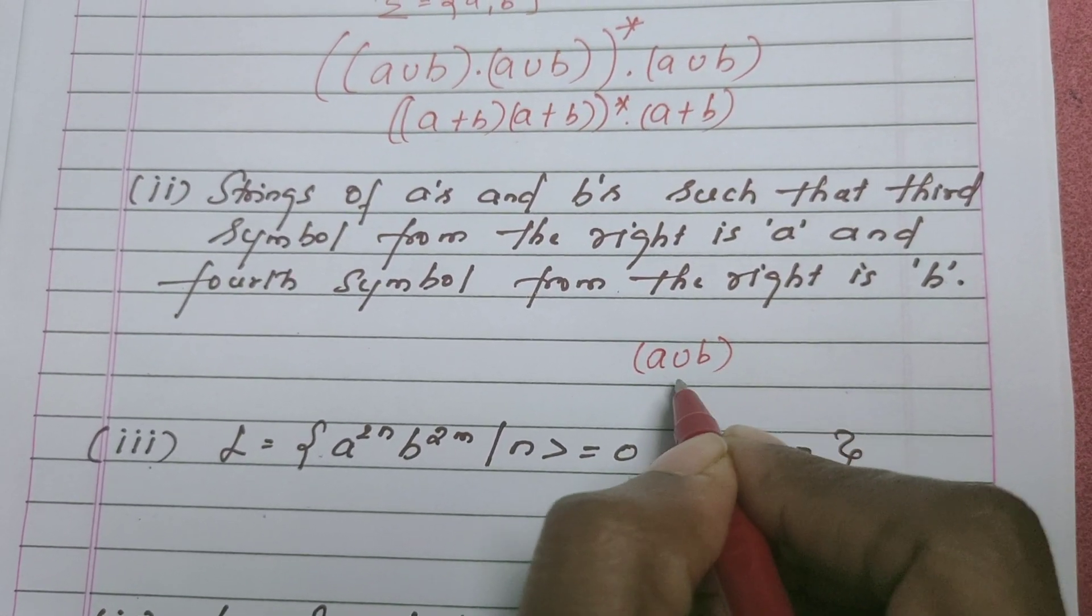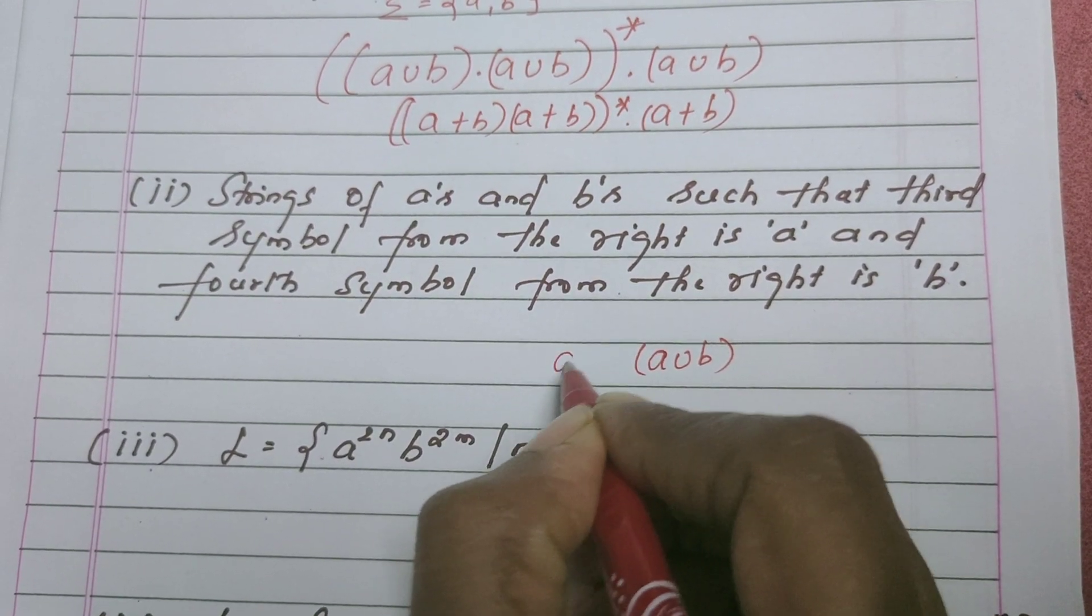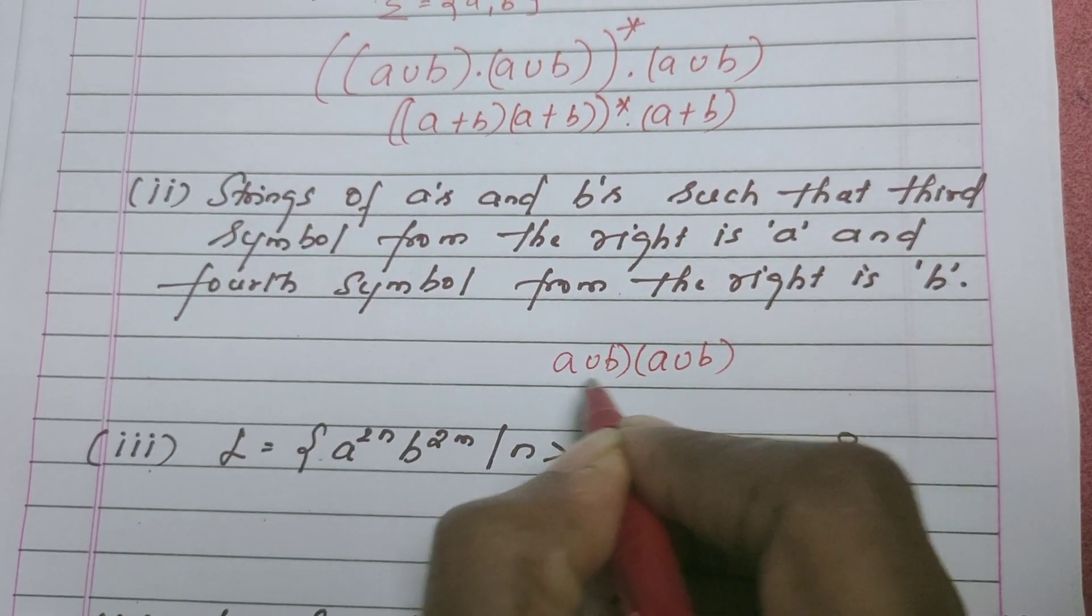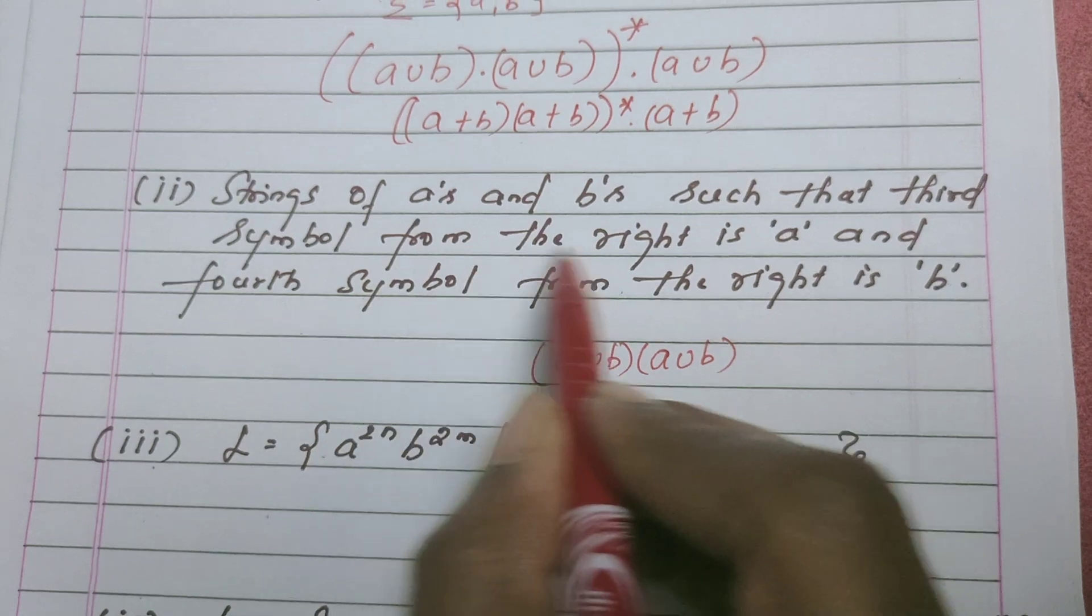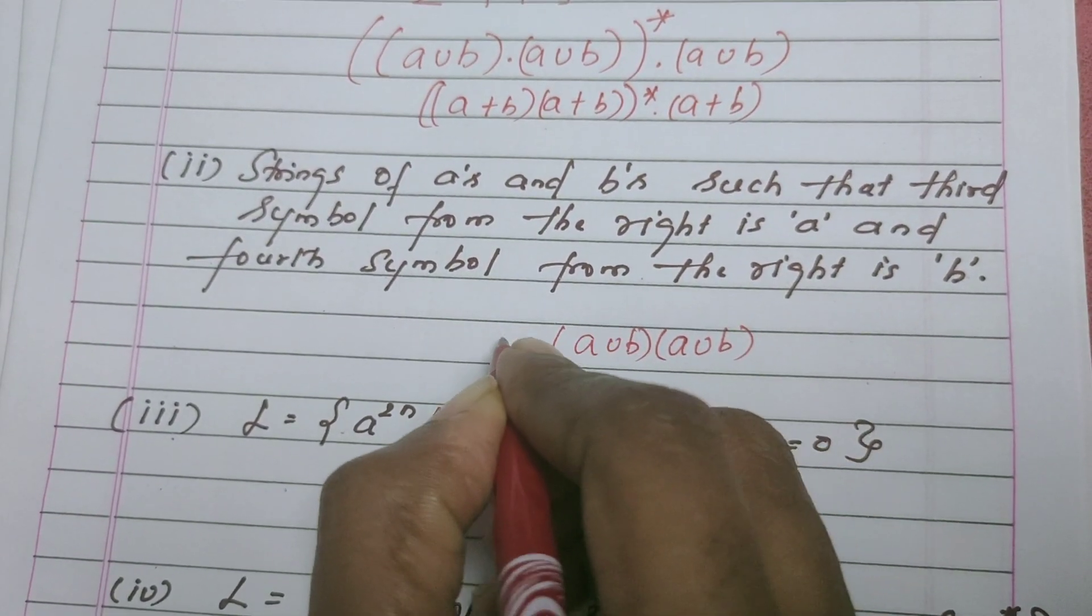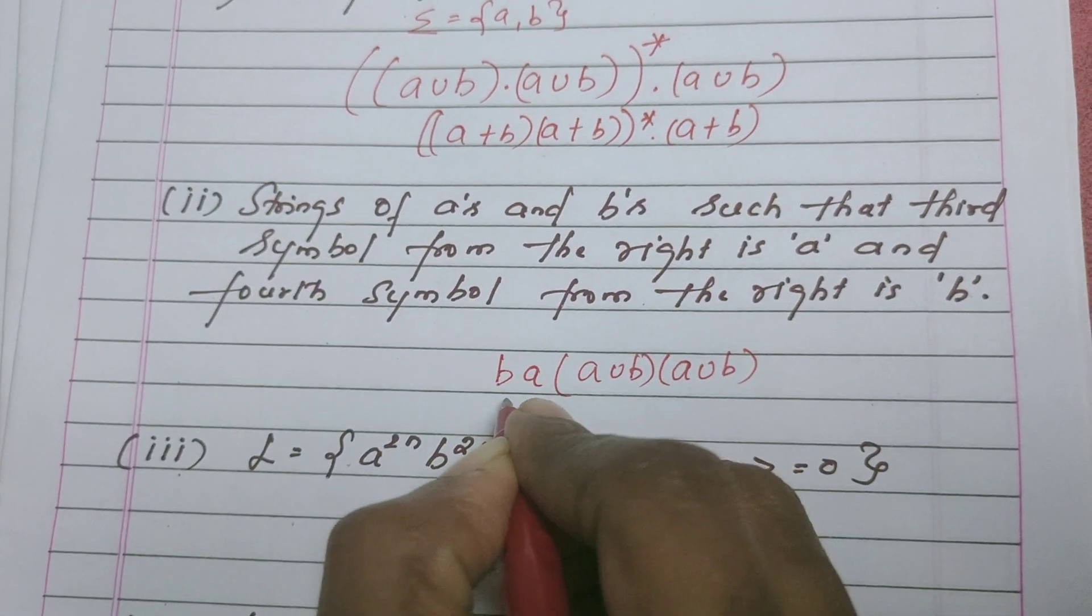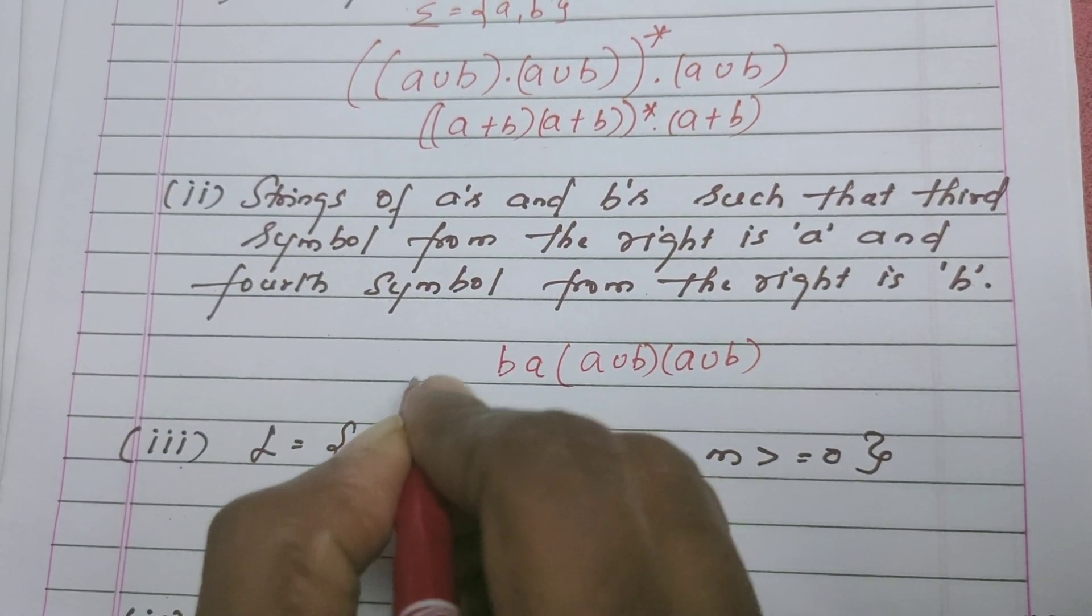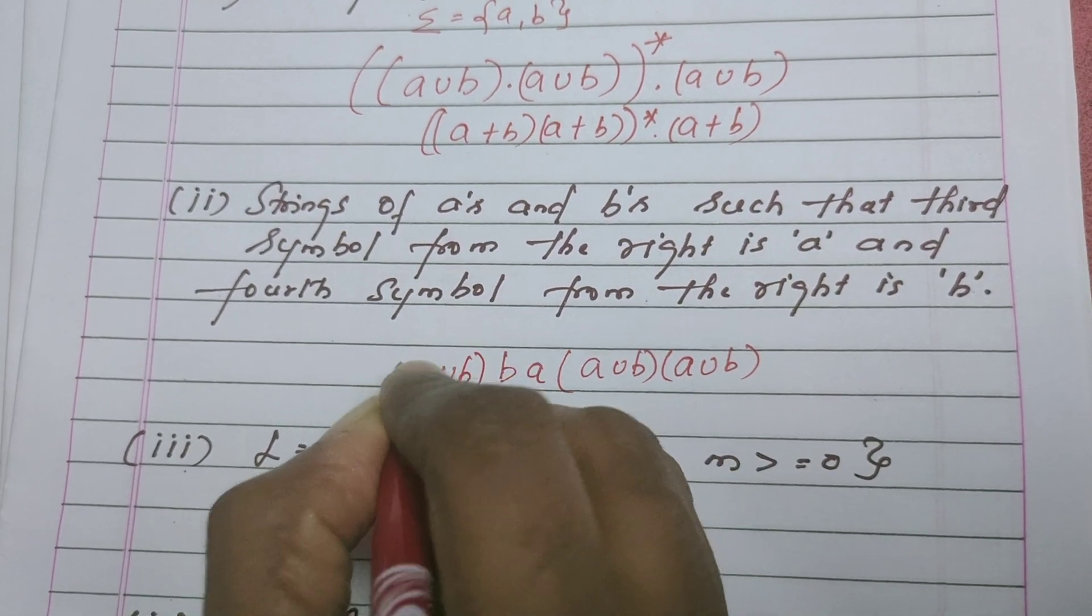From the last, or from the right, the second one is again either A or B. And it is told that from the right the third symbol is A, from the right the fourth symbol is B. So I have written as it is. Again, further we can have any length of A's and B's.